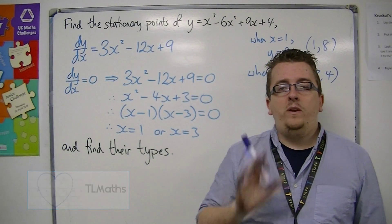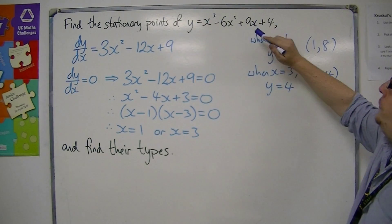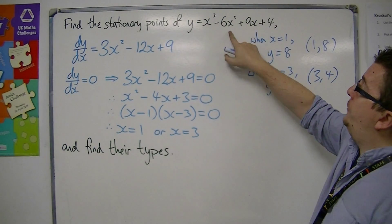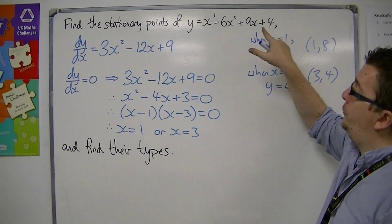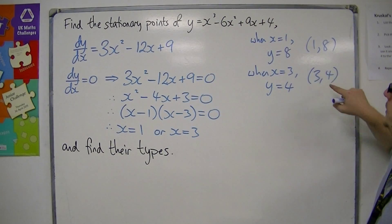In a previous video, we went through this problem. We had to find the stationary points of y equals x cubed minus 6x squared plus 9x plus 4. And we found the stationary points, they were at (1,8) and (3,4).